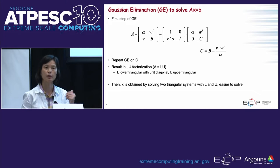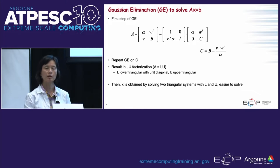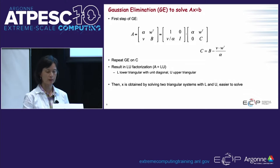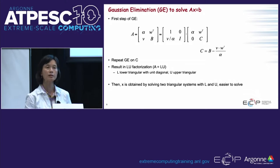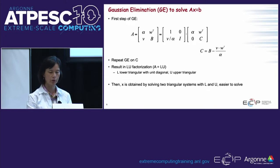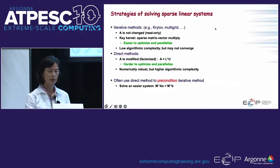With partial pivoting, you get a factorization of a row-permuted matrix — it's not the original matrix anymore. This is the standard trick in dense linear algebra, in LAPACK, ScaLAPACK, and nowadays for exascale machines the SLATE software. For sparse cases there are additional complications, which I'll just mention briefly — it's not the focus of today's talk.